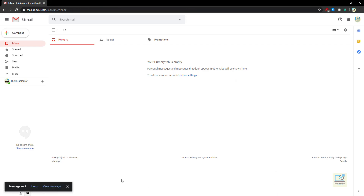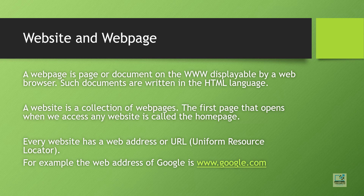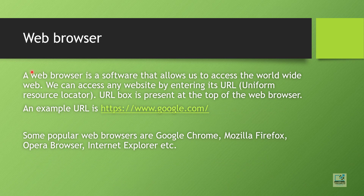Now let us discuss websites and web pages. A web page is a page or document on the World Wide Web displayable by a web browser. Such documents are written in HTML — HyperText Markup Language. A website is a collection of web pages; the first page that opens when you access any website is called the home page. Every website has a web address or URL — Uniform Resource Locator. For example, the web address of Google is www.google.com.